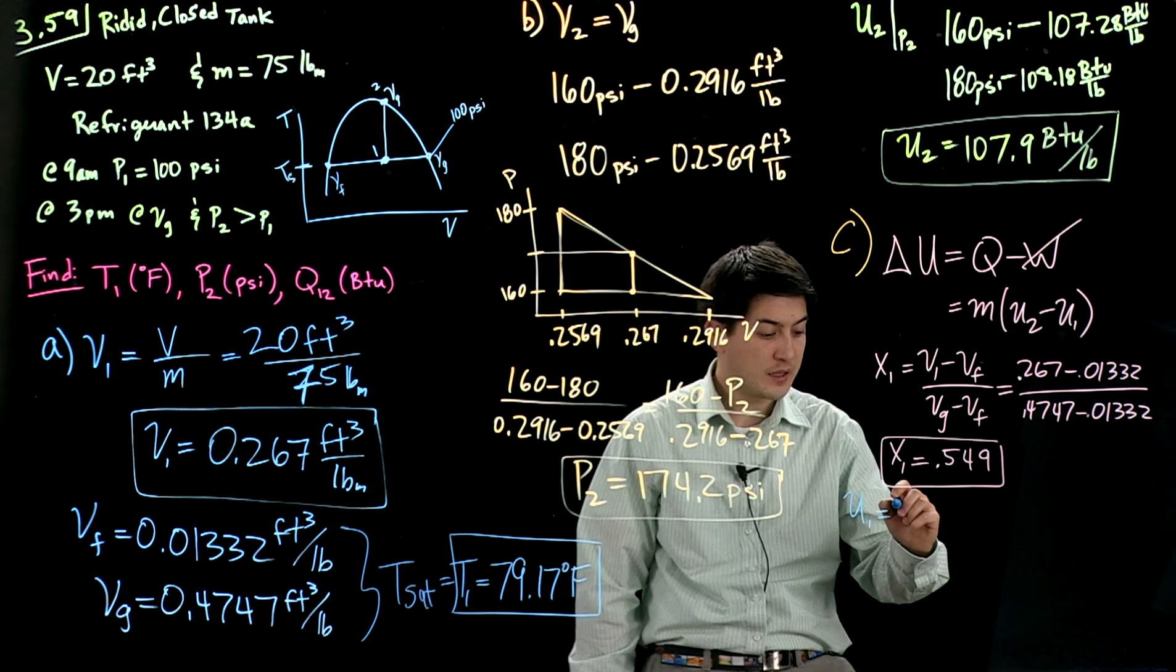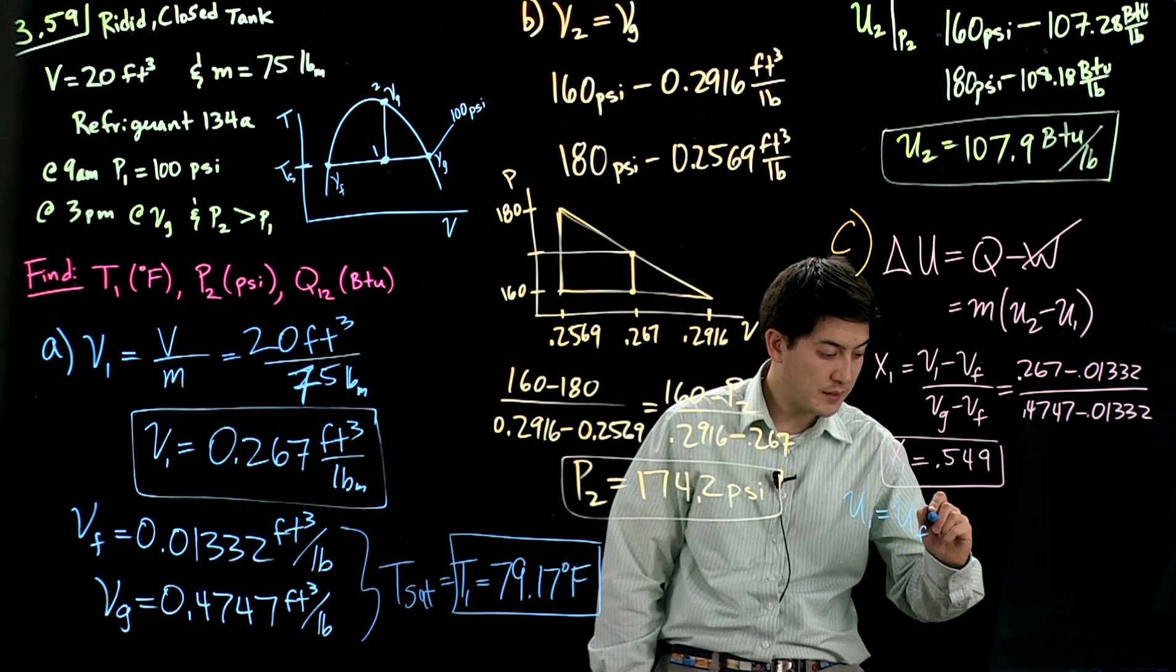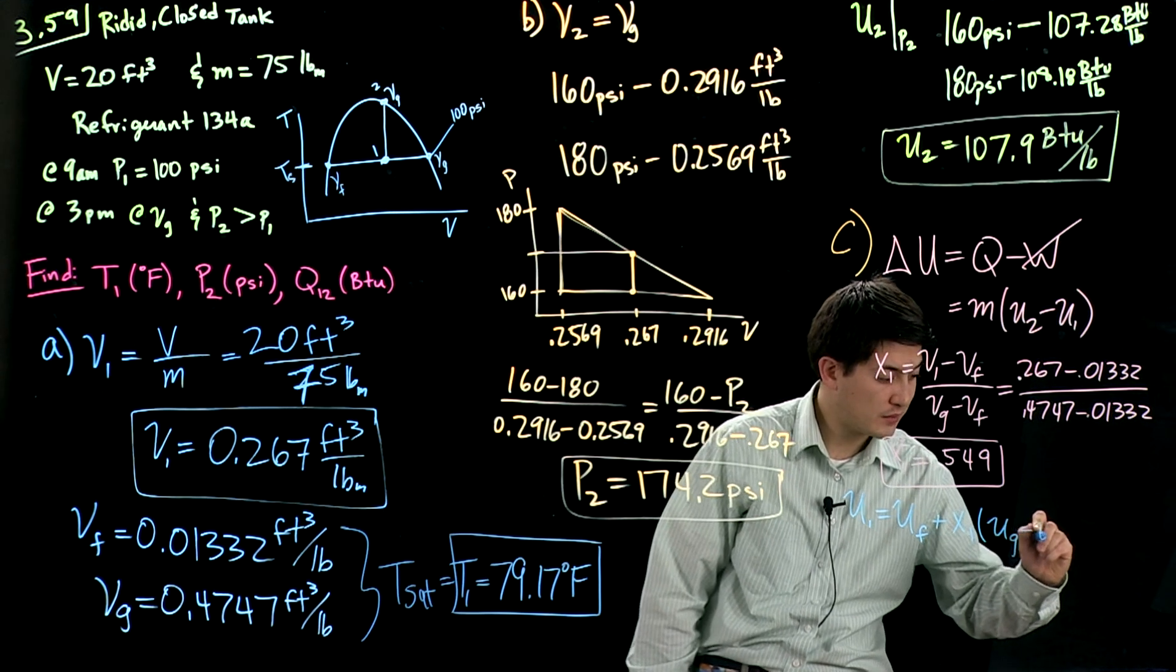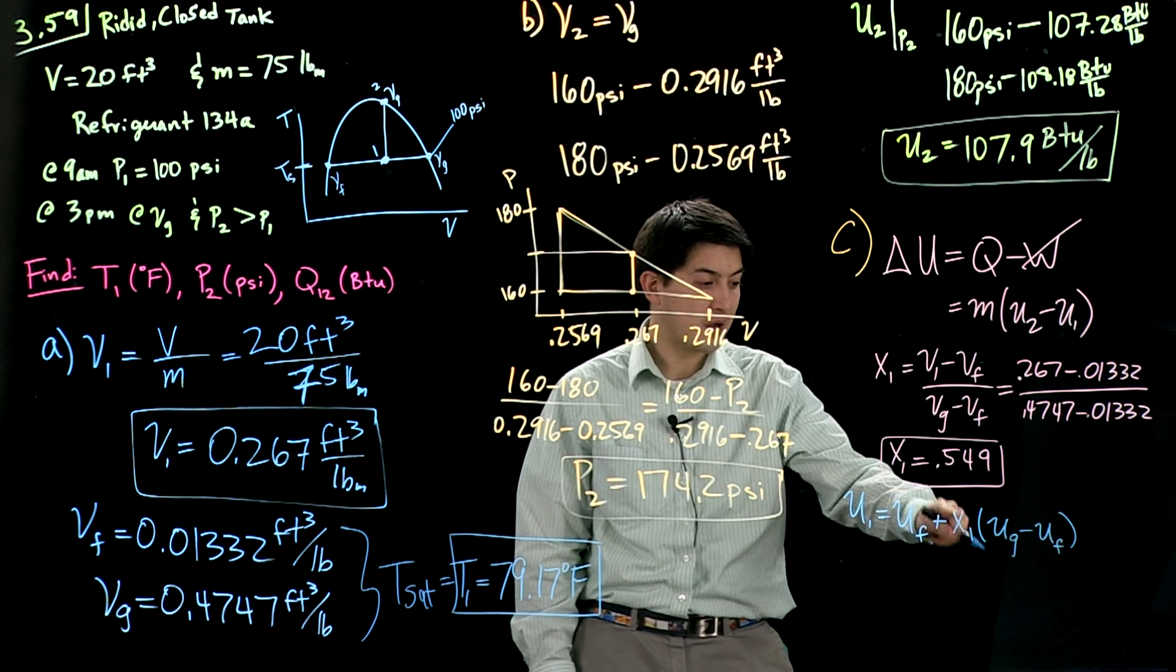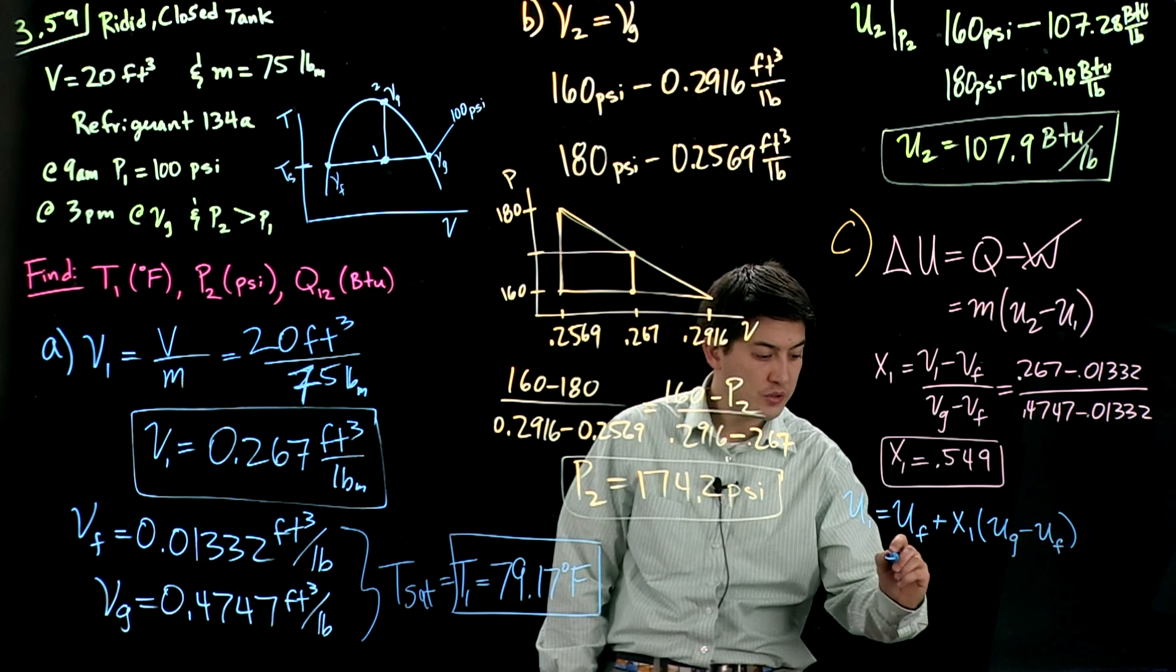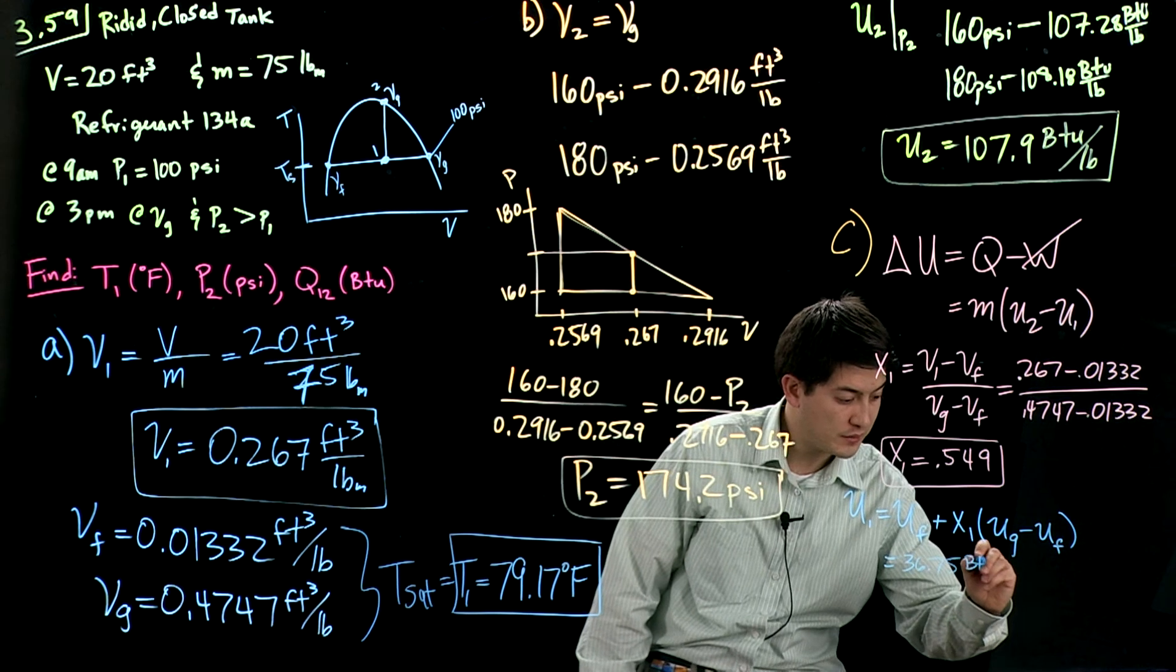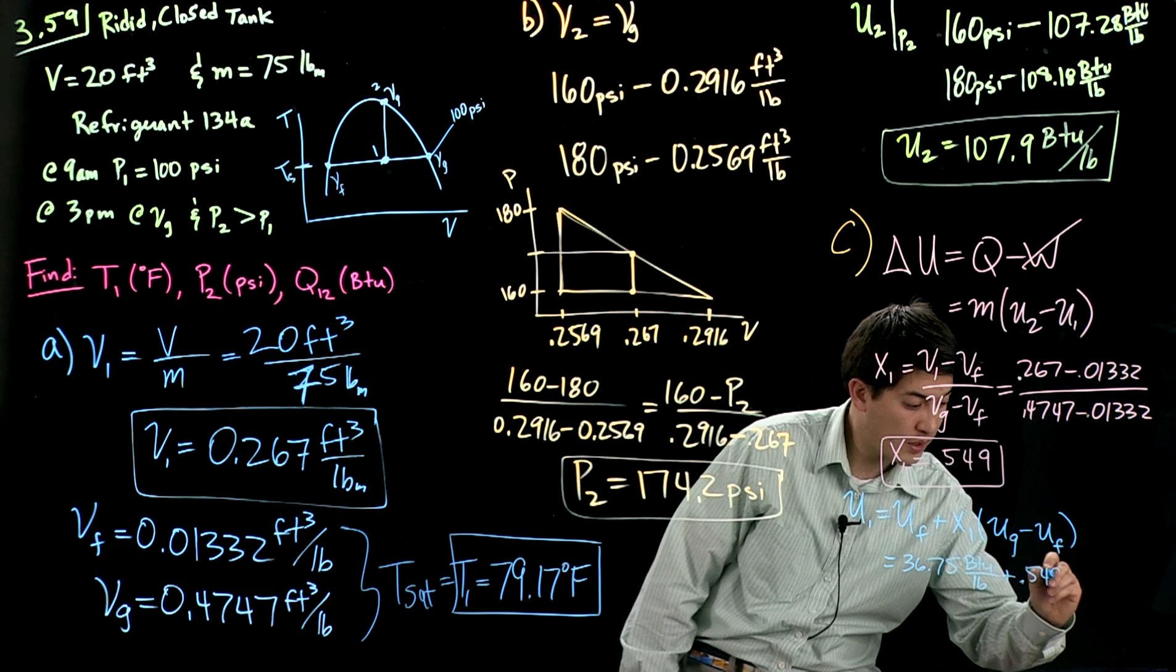We now can say that the energy at state 1 is the saturation of fluid at state 1, saturation energy of fluid plus the quality times the difference and the saturation energy from the saturation energy from gas minus the fluid saturation energy. Again, you can get those off the table. The quality we just found.